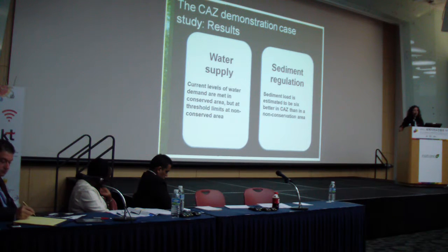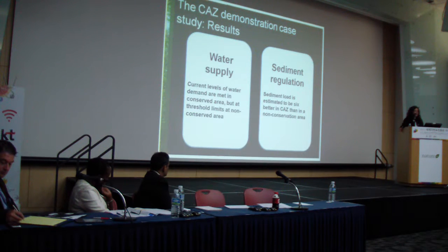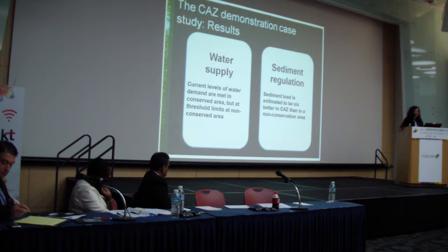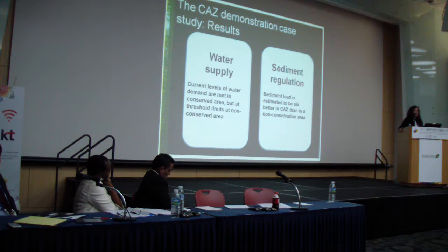Levels of sediment were significantly higher on the site more closely associated with agriculture — about six times higher than the other site. This demonstrates the role of forests in capturing precipitation water, regulating flows to meet different needs, and also regulating sediment levels in the water.